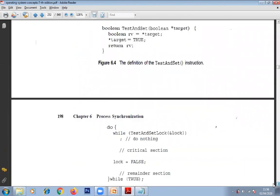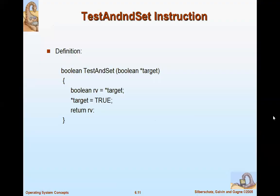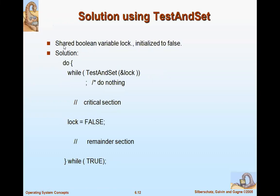The test-and-set instruction is used to test whether a process requires a lock or not and sets the process to true. We have a shared boolean variable 'lock' initialized to false. If test-and-set(lock) returns false, do nothing; otherwise enter the critical section. Once you complete your task, set lock back to false, then handle the remainder section if required.